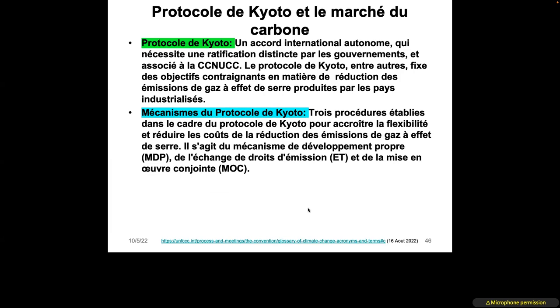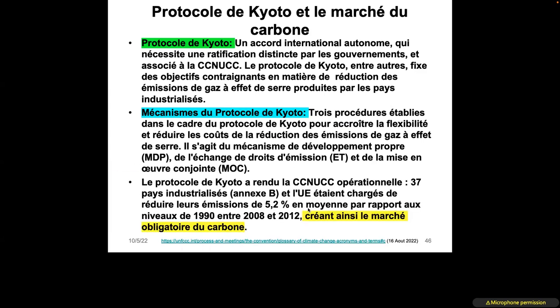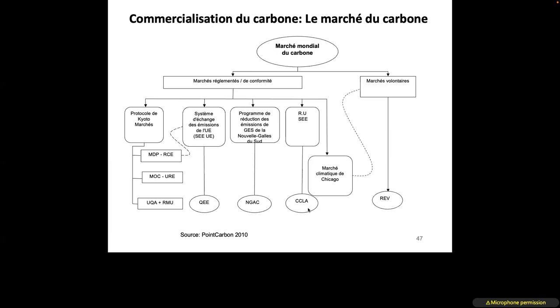The Kyoto Protocol made the UNFCCC operational. 37 industrialized countries — Annex B parties — and the European Union were required to reduce emissions by an average of 5.2% relative to 1990 levels between 2008 and 2012, creating the mandatory carbon market. This market had roughly four components: the protocol market itself, the emissions trading system, the greenhouse gas reduction program, and associated regulatory procedures for monitoring, reporting, and verification.